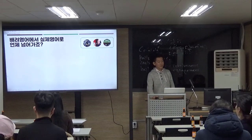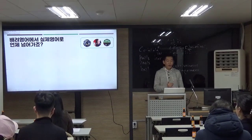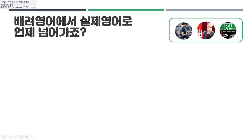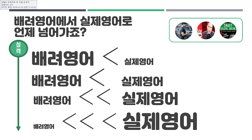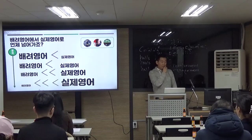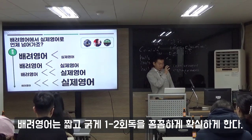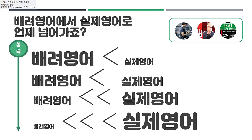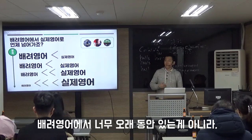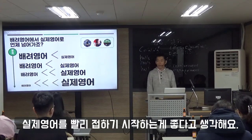그러면 이런 질문을 할 수 있어요. 배려용어에서 실제형으로 언제 넘어갈까요? 제가 생각하기엔 이래요. 배려용어를 아까 말씀드렸다시피 짧게, 굵게 쫙 하는 거예요. 1회독, 2회독 하라고 했잖아요. 수학 같은 거 3개월, 6개월. 아주 그냥 빡세게 딱 하는 거예요. 그런 다음에 실제형으로 바로 넘어갔으면 좋겠습니다.